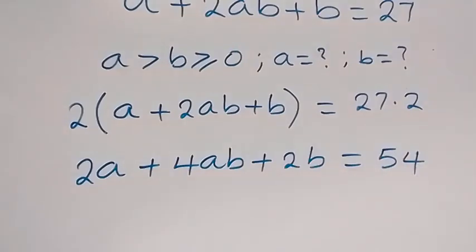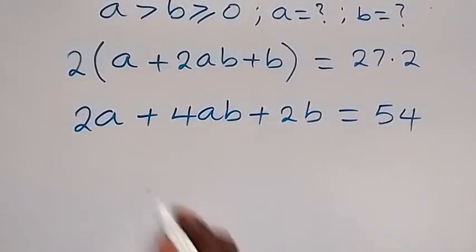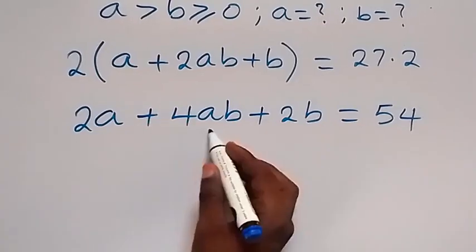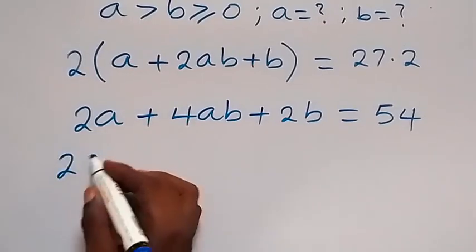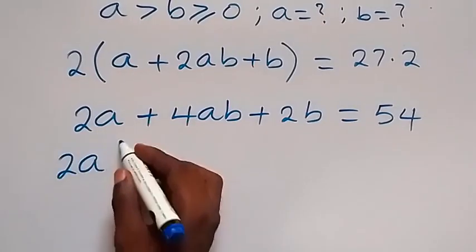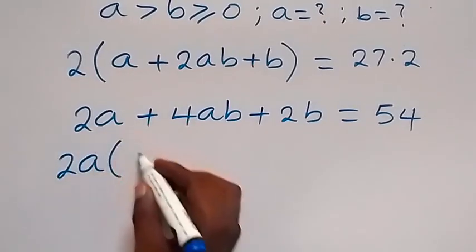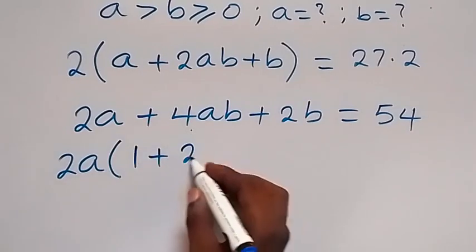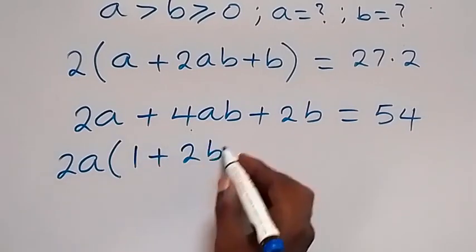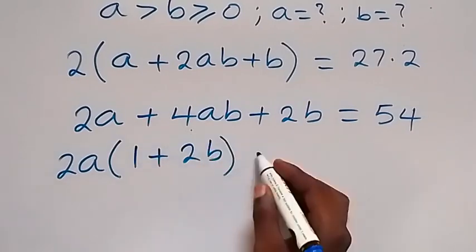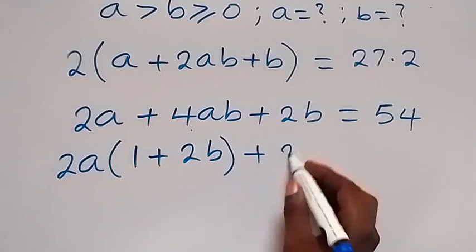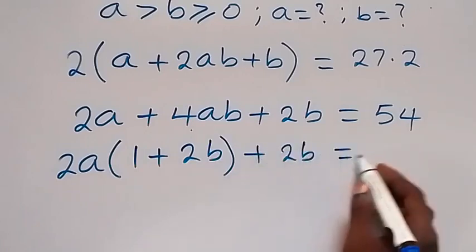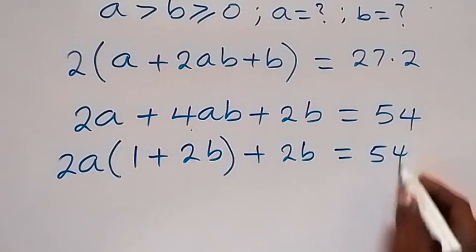In the next step, let's factor 2a from the first two terms, so 2a comes out and we are left with (1 plus 2b) in the bracket, plus 2b equals 54.